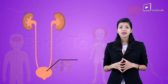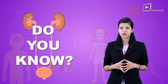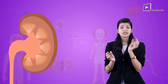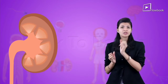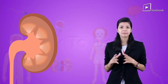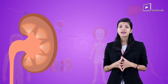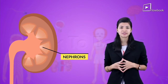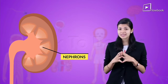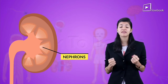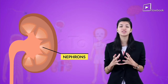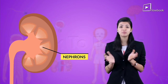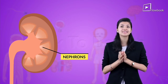Did you know that the kidney has microscopic tubules which are millions in number? These are the nephrons and they are also called renal tubes. These nephrons are the structural and functional units of a kidney, meaning all the functions of the kidney are performed by these nephrons.